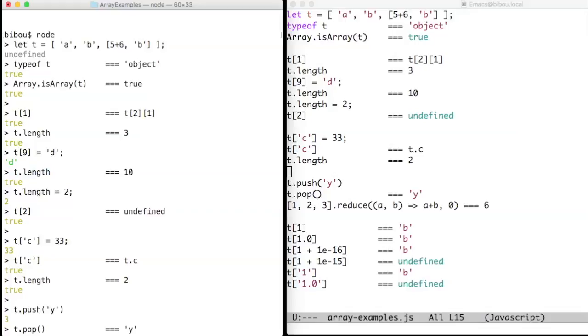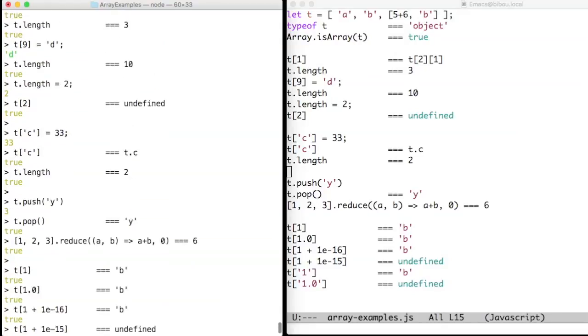The length property can also be set, and in that case it will shorten the array. Arrays are objects, so non-numeric keys are also possible, but this doesn't change the length of the array.